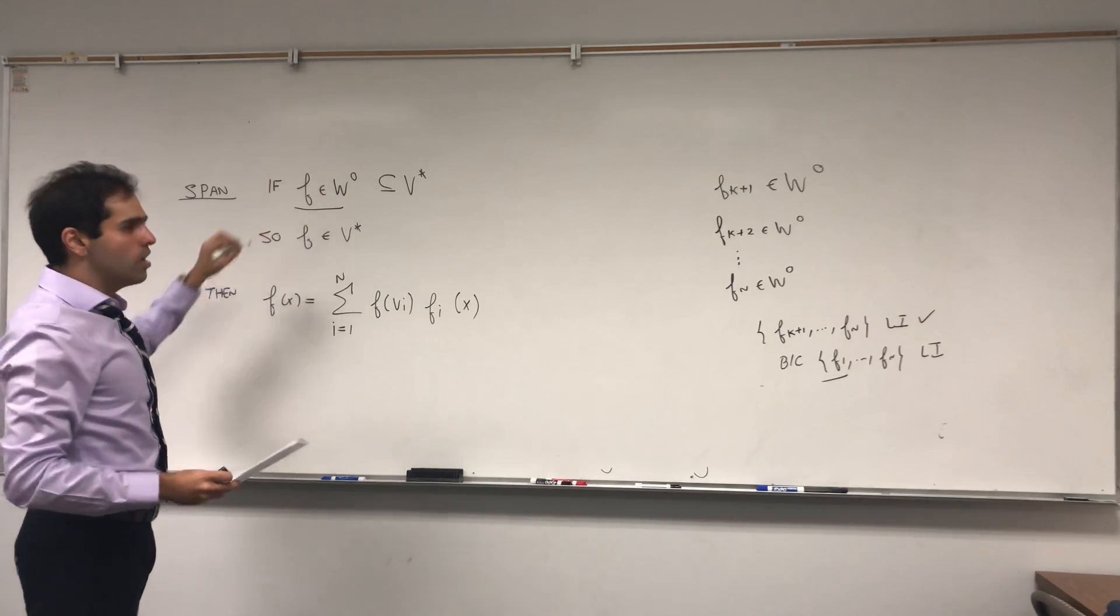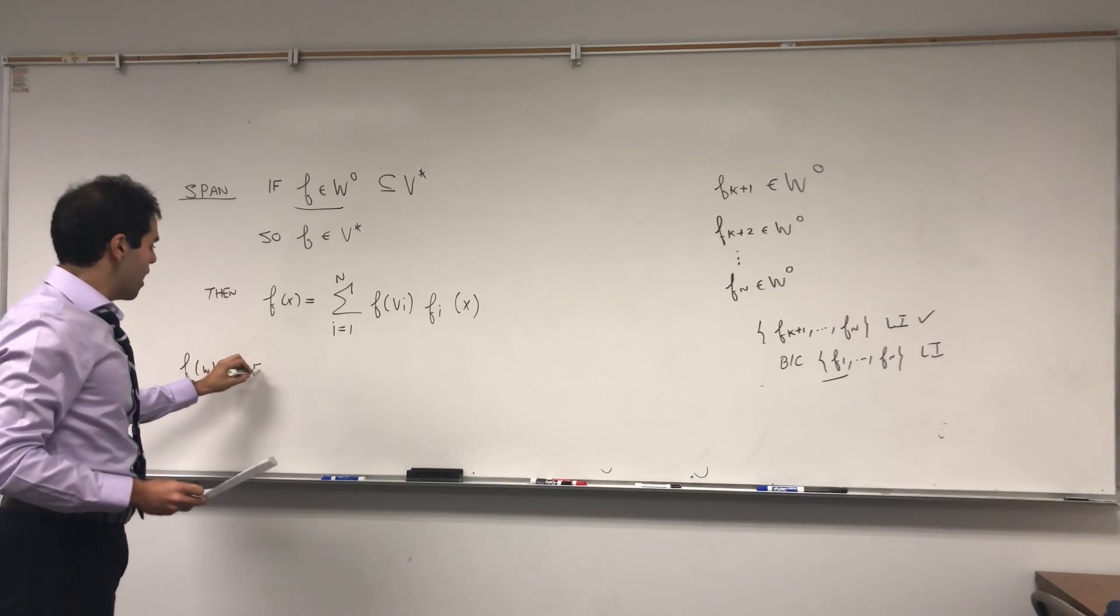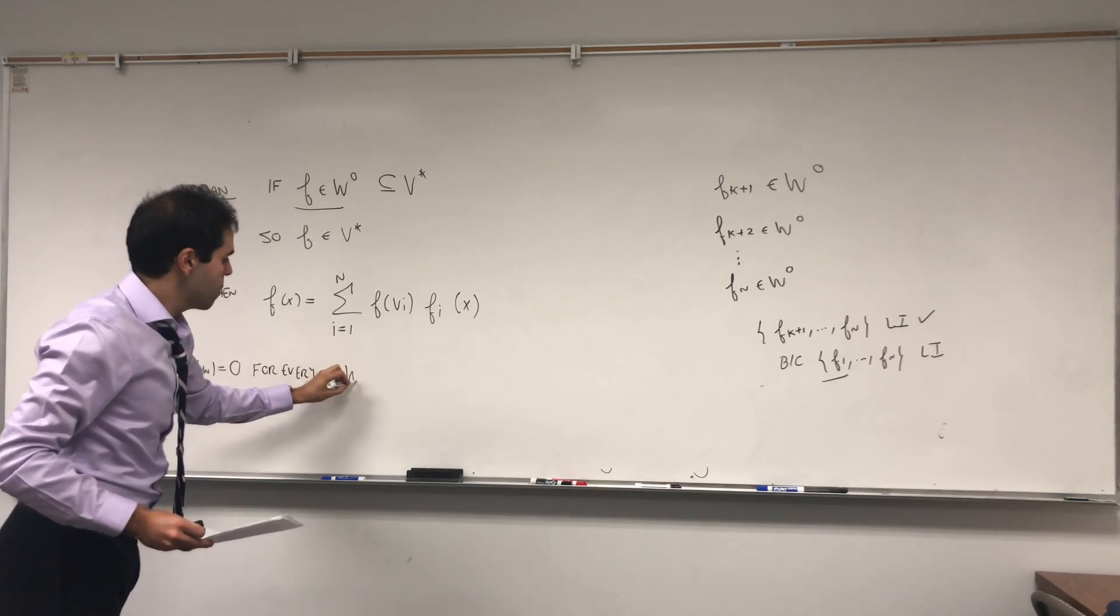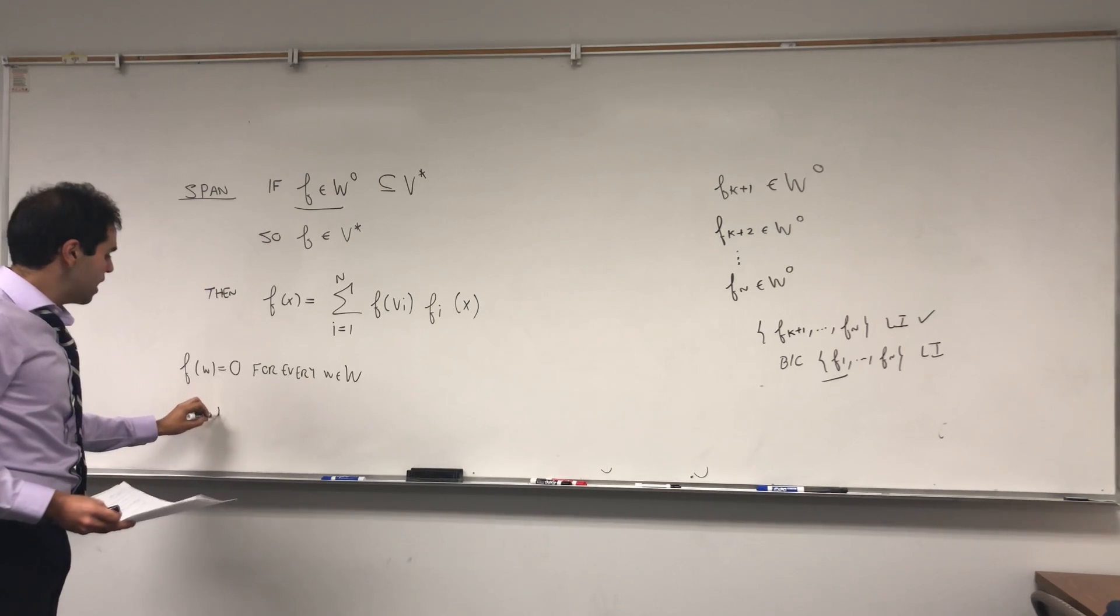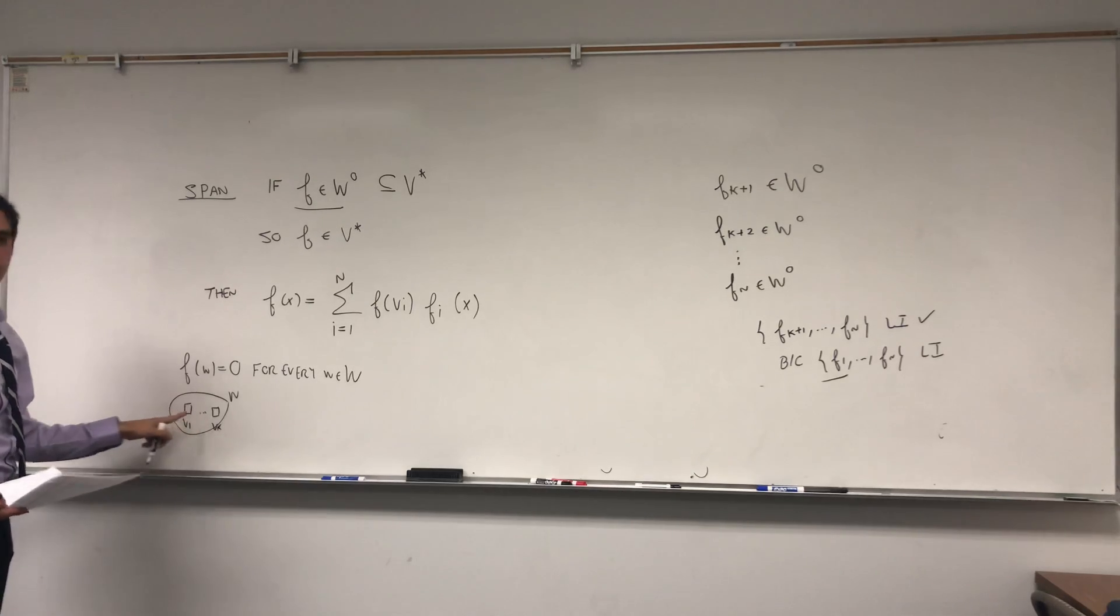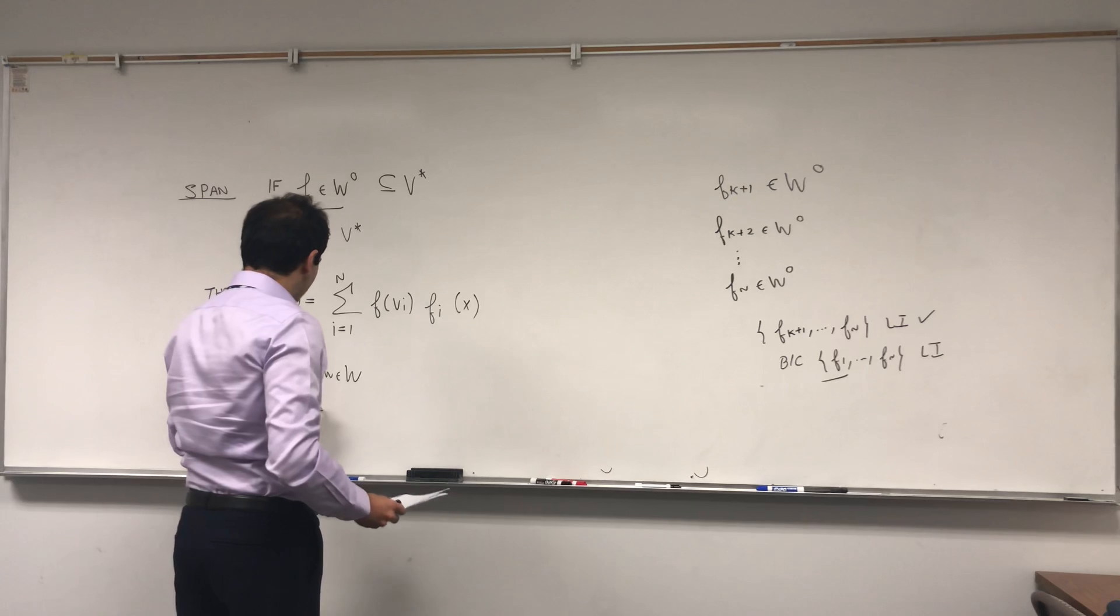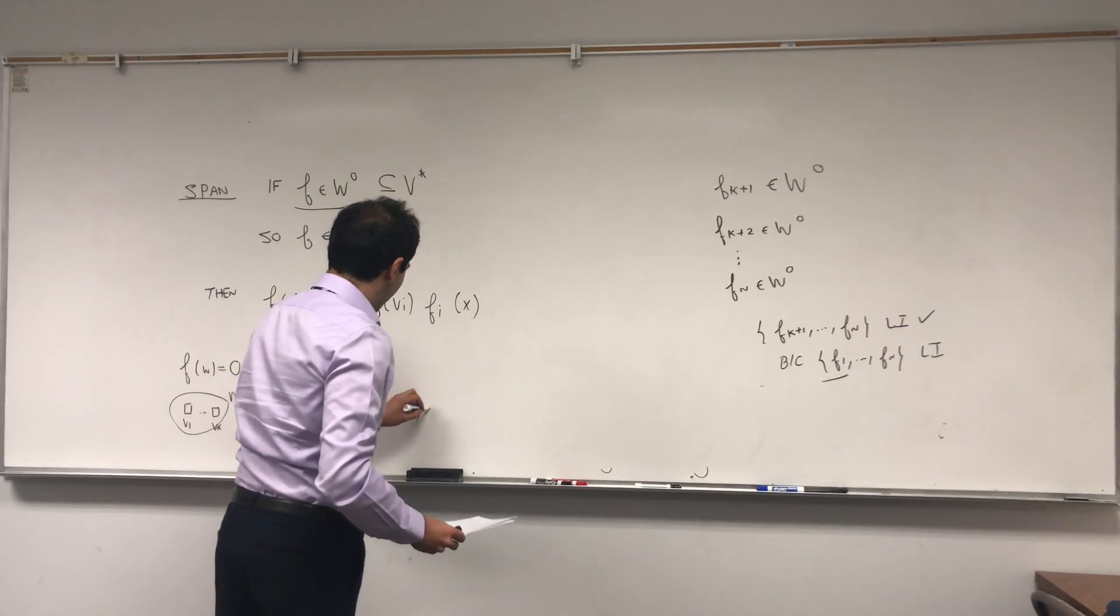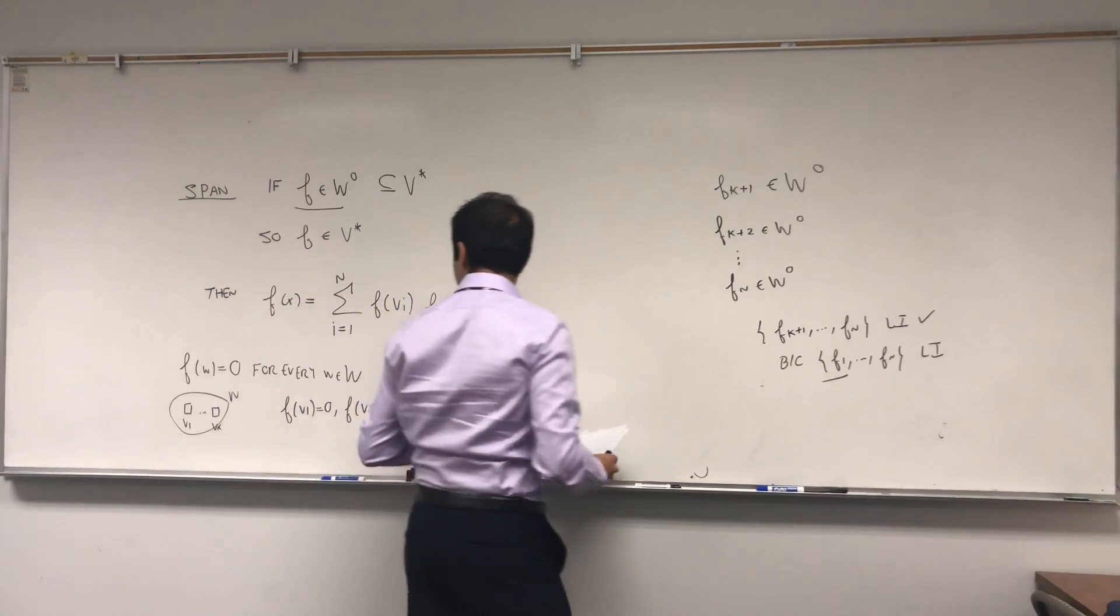Now if f is in w naught, we know that f(w) equals zero for every w in W. In particular, remember we have this basis v1 up to vk. Well, it's a basis of W, so each vector is in W. In particular, f(v1) equals zero, f(v2) equals zero, dot dot dot, f(vk) equals zero. So in particular, this sum is just...